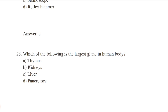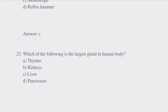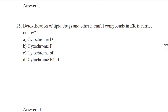Which of the following is the largest gland in the human body? Options: thymus, kidney, liver, pancreas. Answer: option C — liver. Liver is the largest gland in the human body.